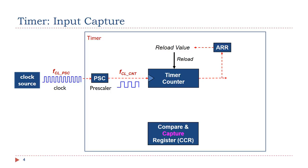A timer can also be used for input capture. When a specific external event occurs, such as a rising edge of an external signal, hardware automatically copies the current value of the timer counter to the compare and capture register. We can use this ability to measure the timing information of a signal event, such as a rising edge or falling edge. To measure the external signal interval, two consecutive captures are needed. We can calculate the period or pulse width by subtracting these two CCR values.